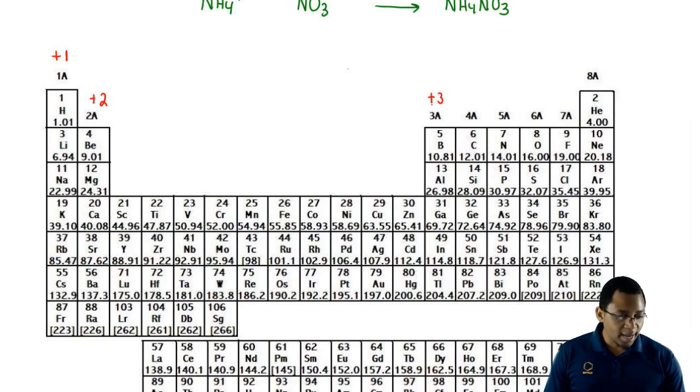Group 7A is minus 1. Group 6A minus 2. Group 5A minus 3.